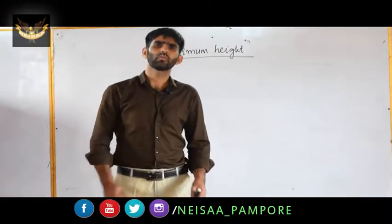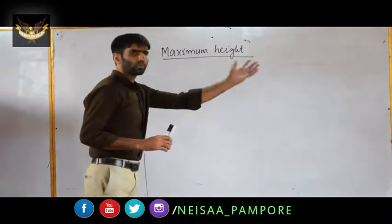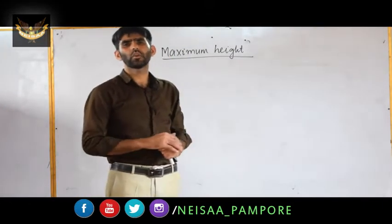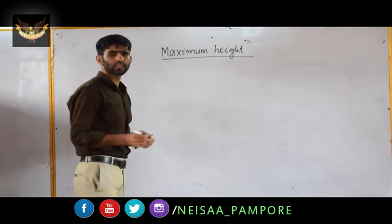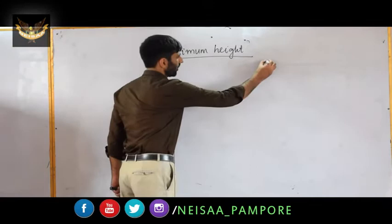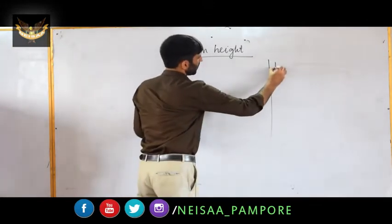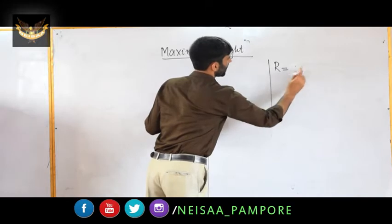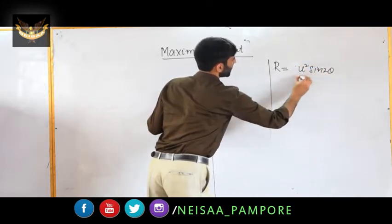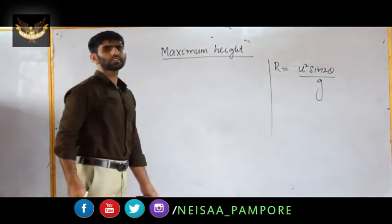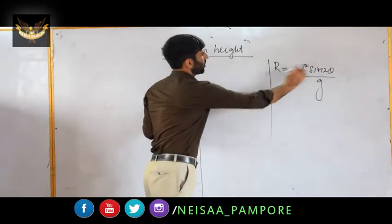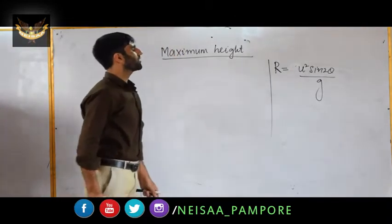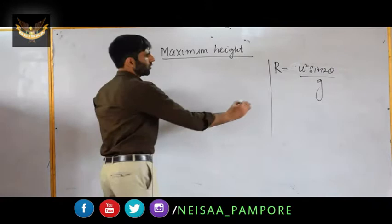Welcome back, dear students. As-salamu alaykum wa rahmatullahi wa barakatuh. We were discussing projectile motion and have covered time of flight and horizontal range. Before discussing maximum height, we will discuss one more property of horizontal range. We know that horizontal range is u² sin(2θ) divided by g. This is the mathematical relation for horizontal range. We will discuss one more important point: horizontal range is maximum at θ = 45°.